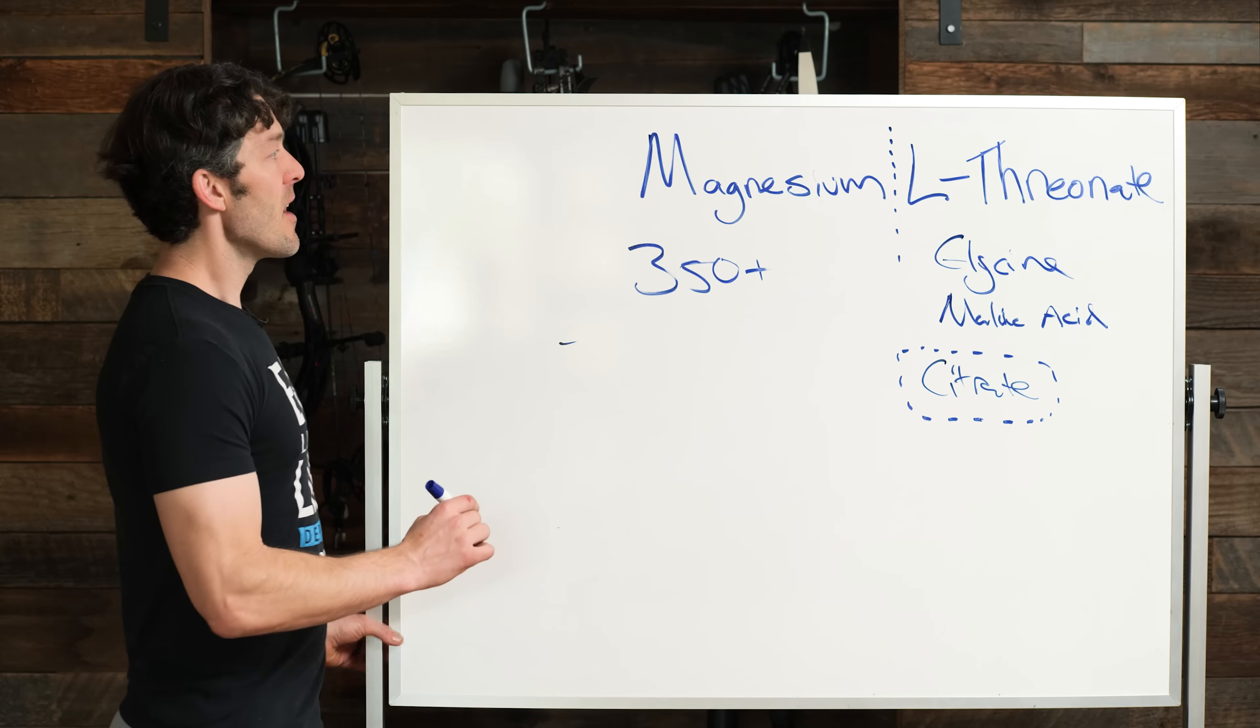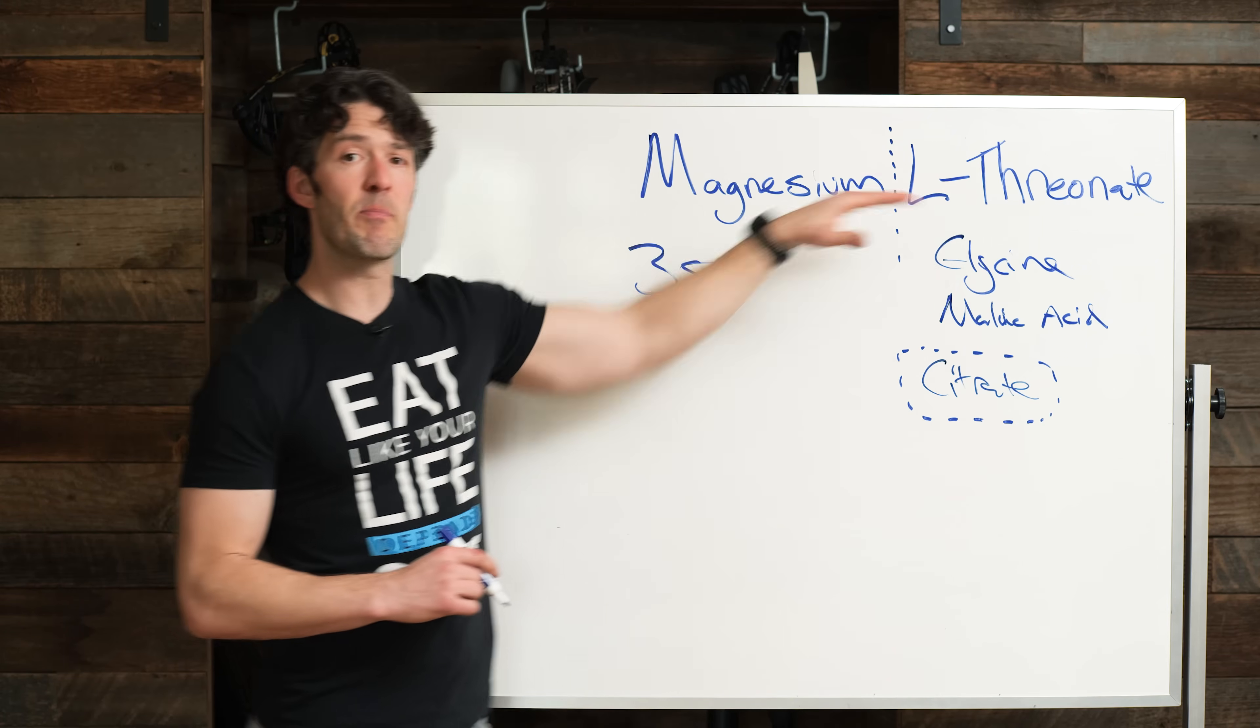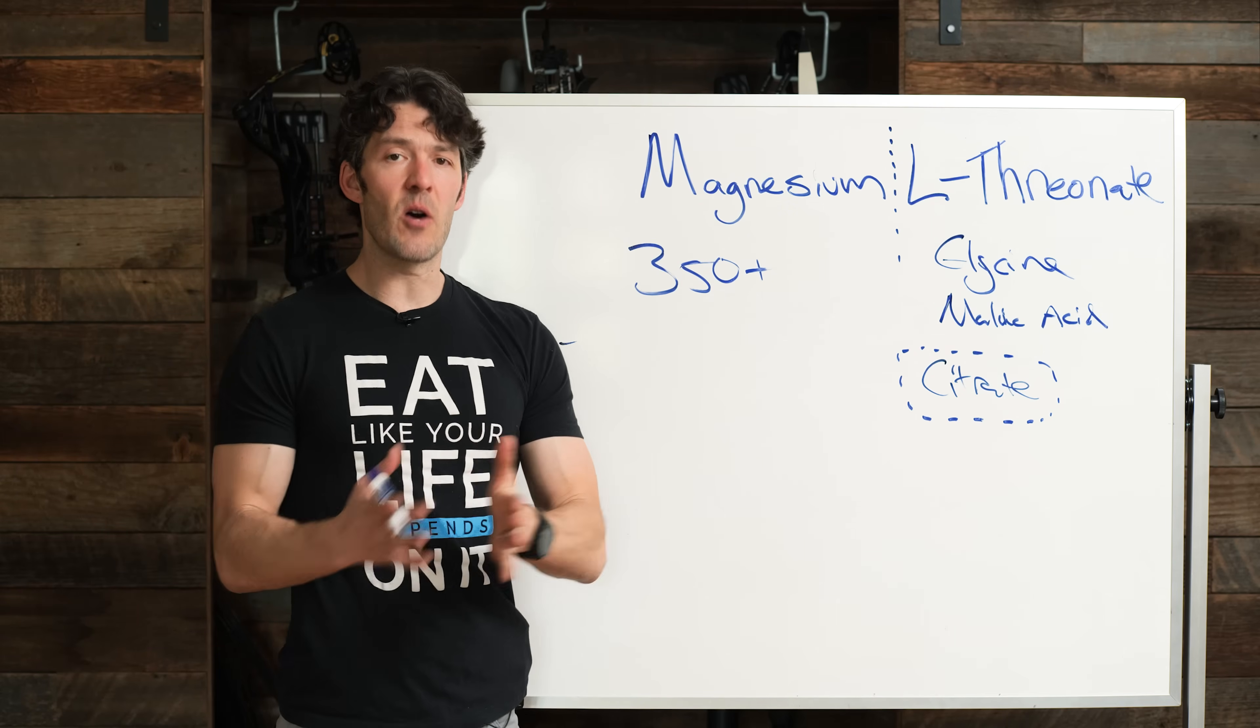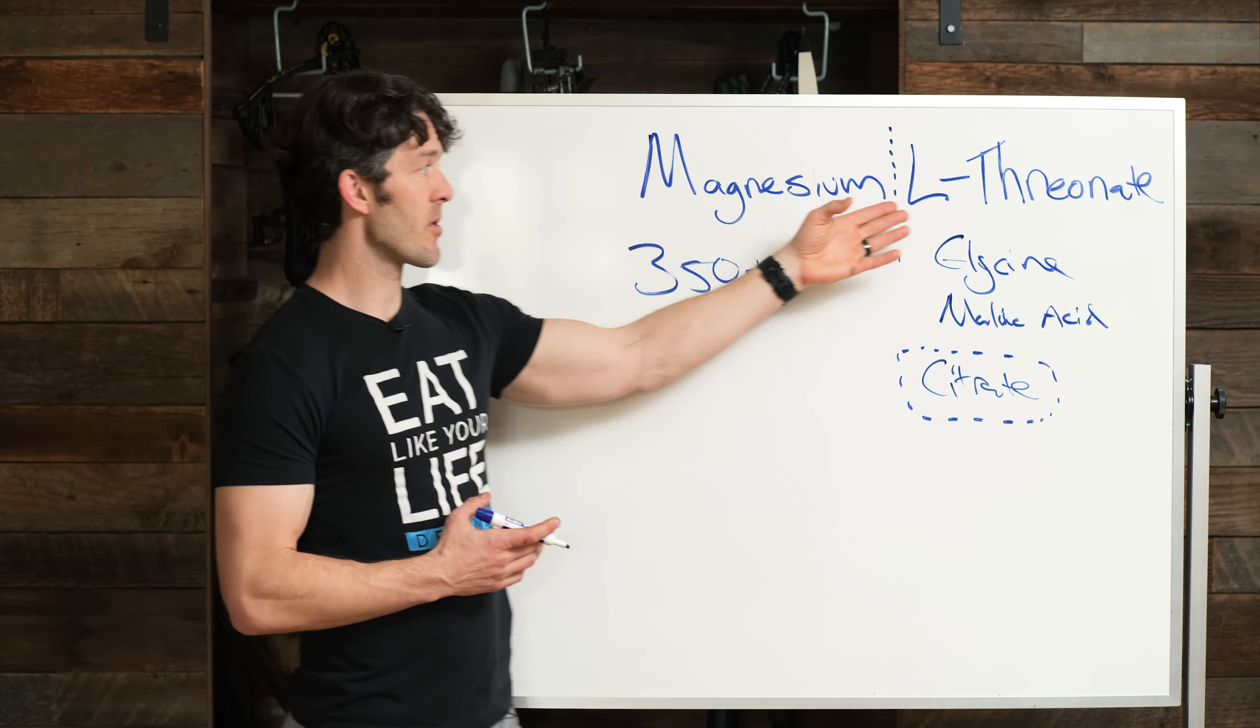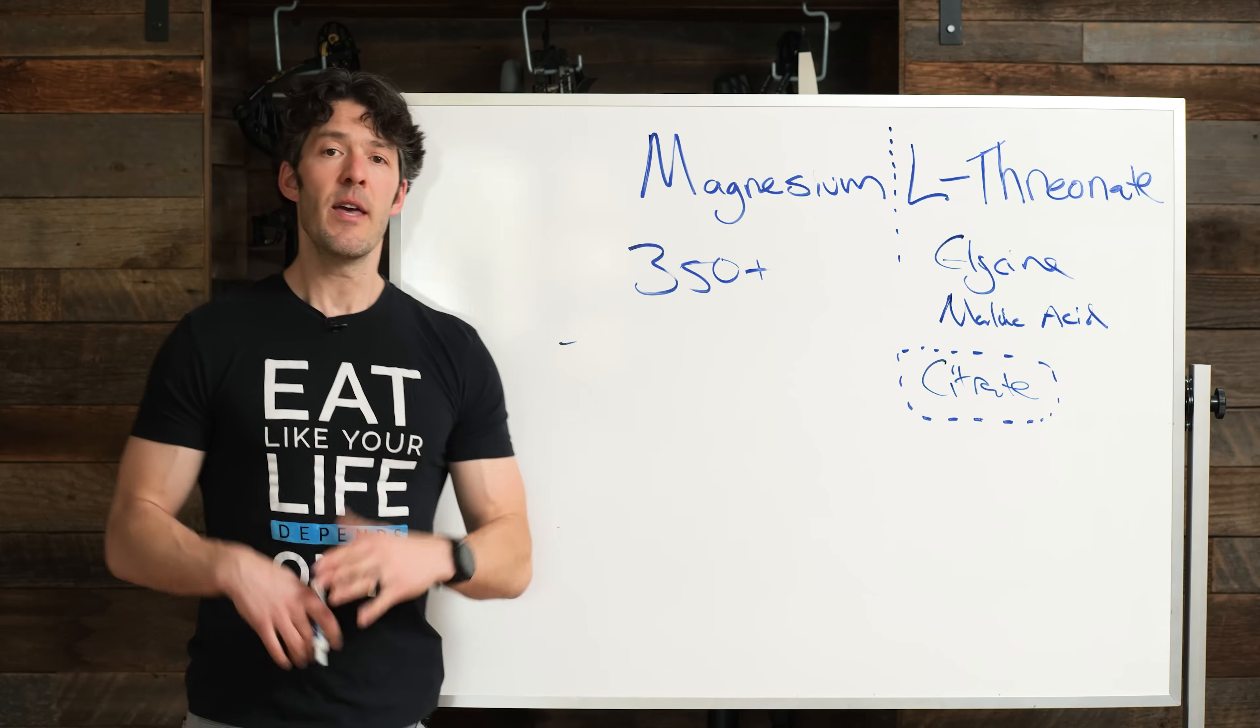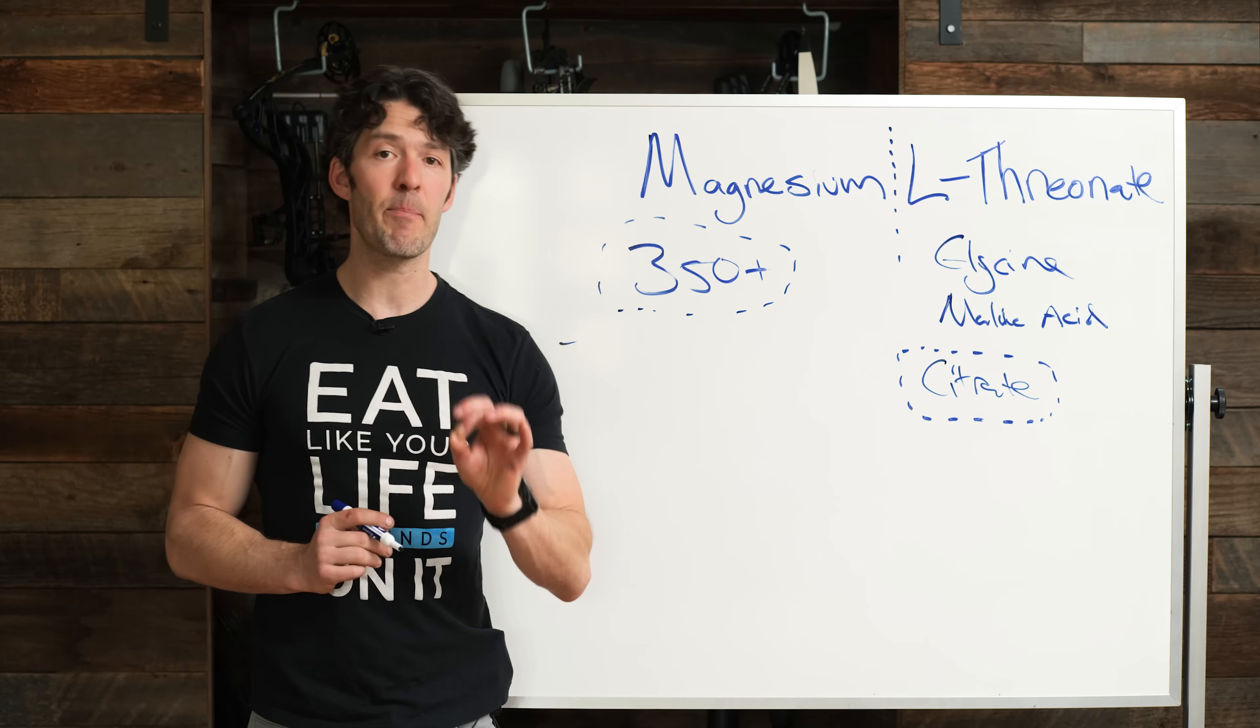Now, let's talk about why L-Threonate paired with magnesium is so unique because L-Threonate actually helps magnesium get absorbed through the glucose receptors. So the cellular transporter that metabolizes and helps cells absorb glucose is the same transporter that magnesium L-Threonate utilizes to help you increase your central nervous system and brain levels of magnesium.